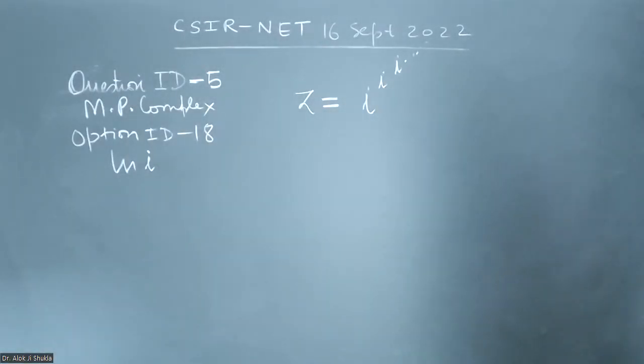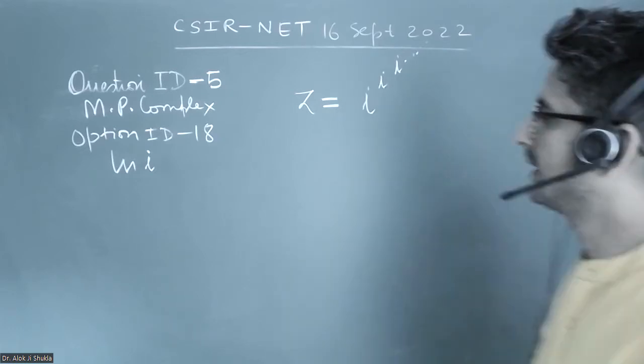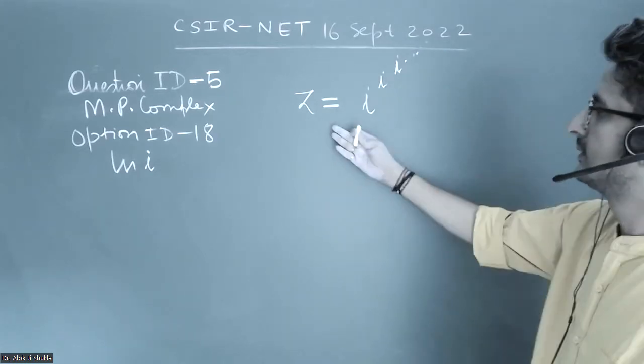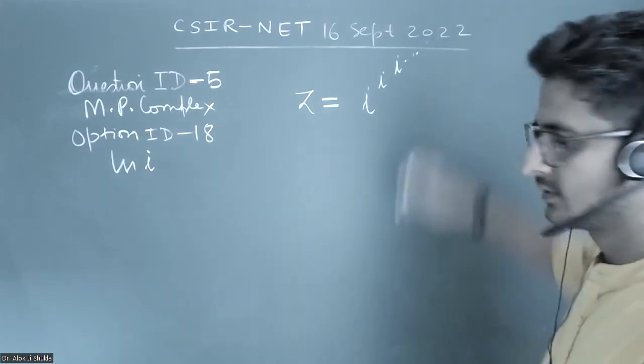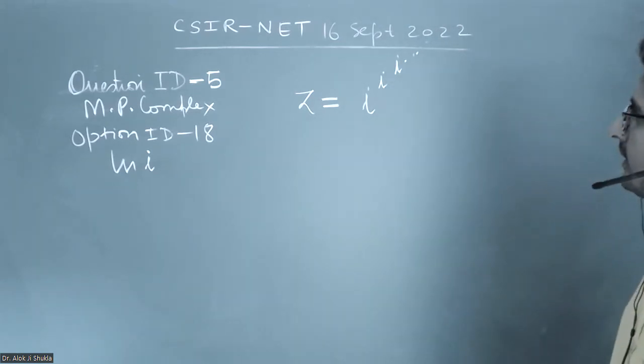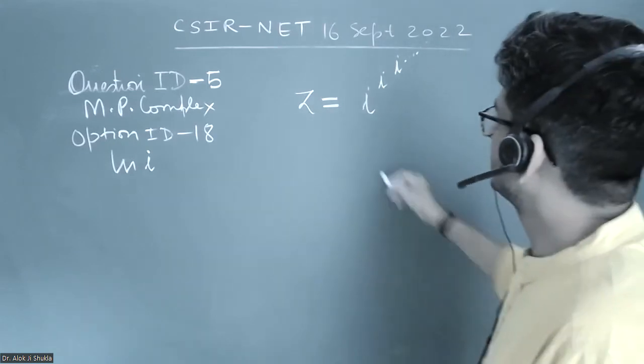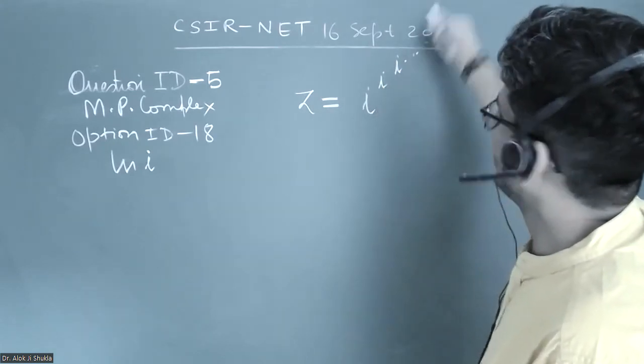This is a question from mathematical physics complex. Some z is given which is equal to iota to the power iota, and it goes till infinity. In such questions, because there are an infinite number of iotas, we can write it as z equals iota to the power z.